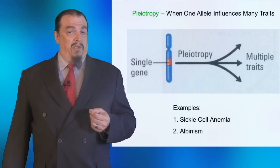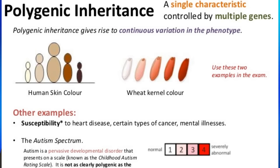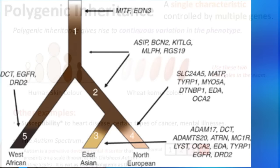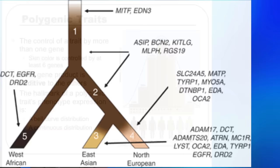Now we are getting even more complicated. Let's have a look at traits that don't just have multiple alleles — they have multiple genes. These traits are called polygenic. As you can see from this diagram, human skin color is controlled by more than one gene. The same is true for hair color. A lot of people think that the genes for red hair are just a simple recessive trait, but of course it's not that simple.